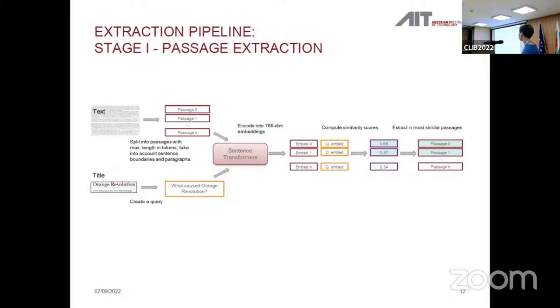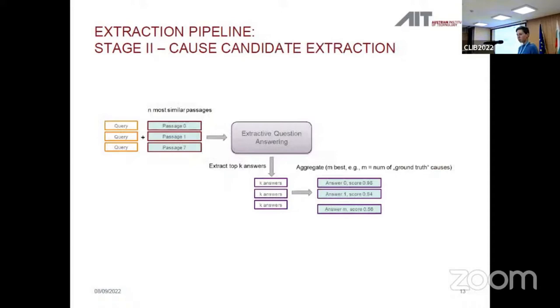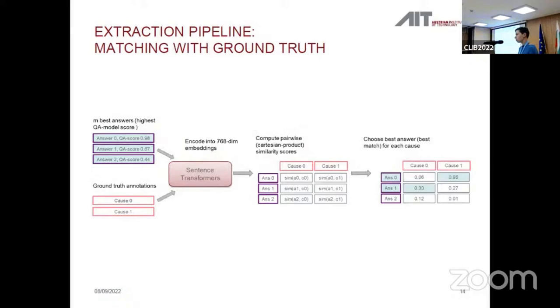So it's the first stage of the extraction pipeline, passage extraction. We just need the title in this case to create a question. We split our text, and then we take the embeddings from the sentence transformers models, which computes similarity scores between these passage embeddings and question embeddings, and then we chose N most similar, most relevant passages. In the second step, we again used our question with these passages to extract top answer candidates. We ranked them, and in the next step we tried to match the answers with the true causes, with the ground truth, in order to obtain the best match.